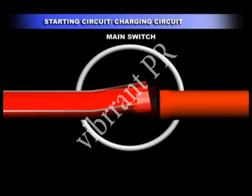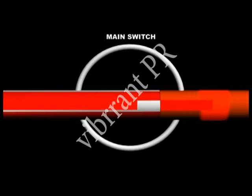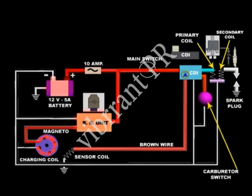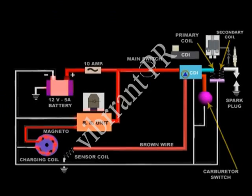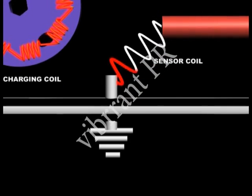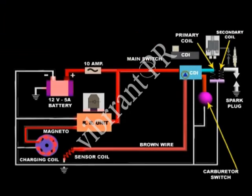As the main switch is put to the on position, current from the charging coil and the battery goes to the CDI. The sensor coil gives pulse current to the CDI through the brown wire for activation.